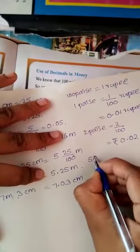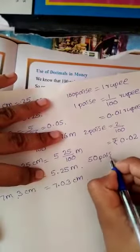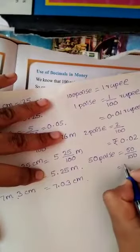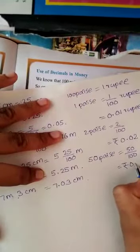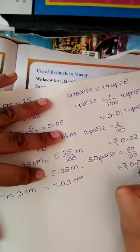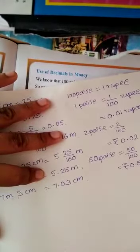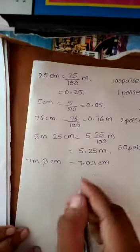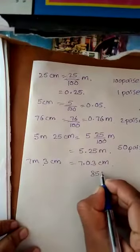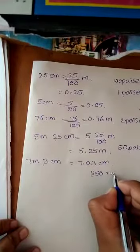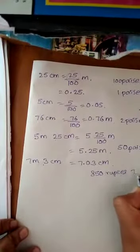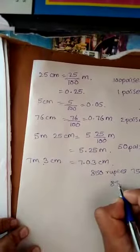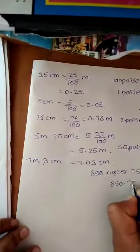15 paisa equals 15/100. How many rupees? 0.15 rupee. Now 815 rupees and 75 paisa, how do we denote? 815.75.